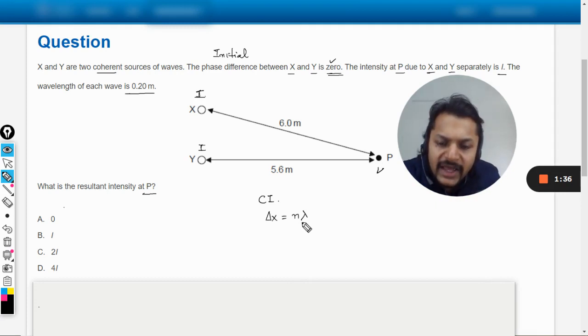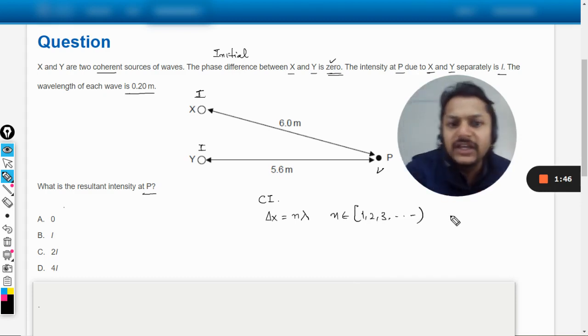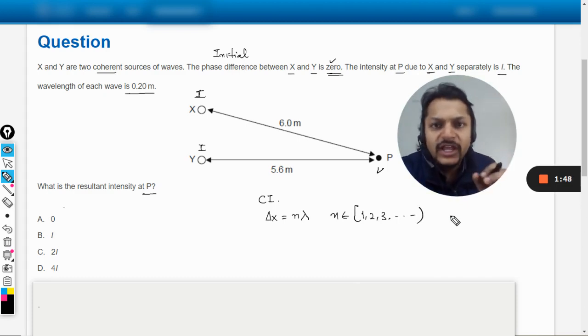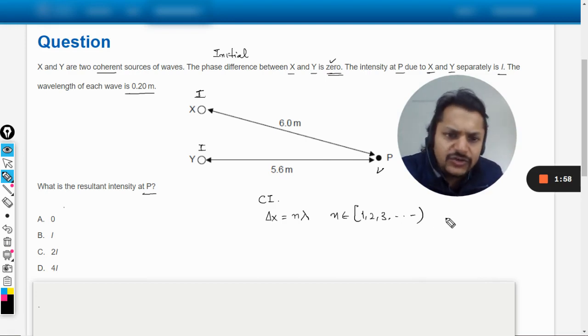So delta X is given by nλ, and if n is an integer 1, 2, 3, I'm not considering 0 here because if it comes out to be equal to 0 it becomes a central maxima. We do not call it first maxima, we call it central maxima. So for the first maxima you got to have n equal to 1.